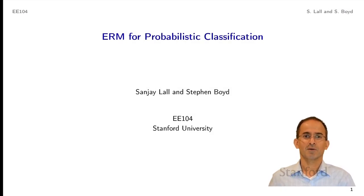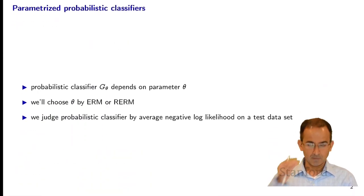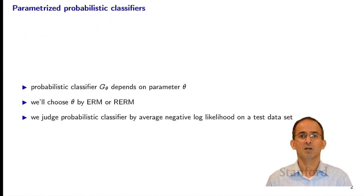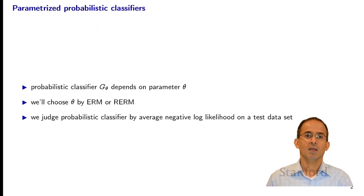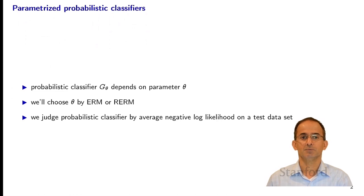Today we're going to discuss ERM for probabilistic classification. The key idea is that we have a probabilistic classifier g sub-theta, which depends on a parameter theta. It takes as input u and returns a probability distribution over the target set. We're going to choose theta by ERM or regularized ERM, and we want to judge the performance of the probabilistic classifier using the average negative log likelihood on a test dataset.